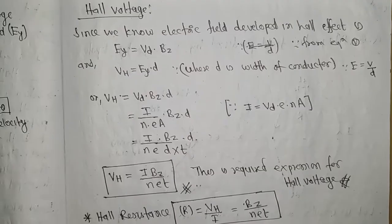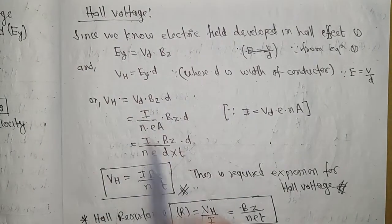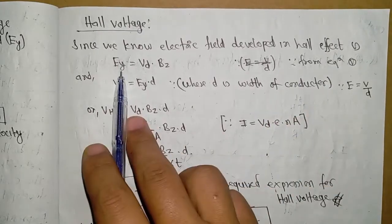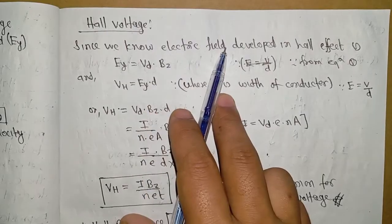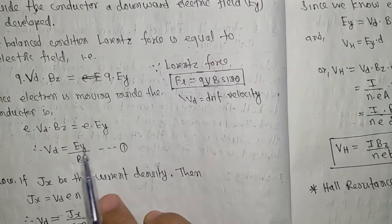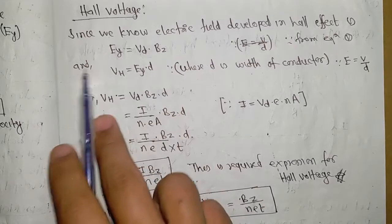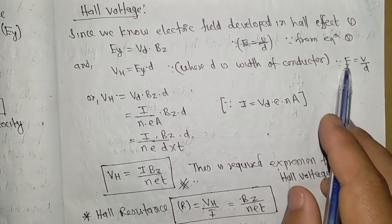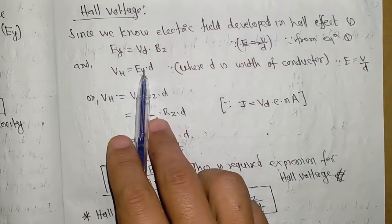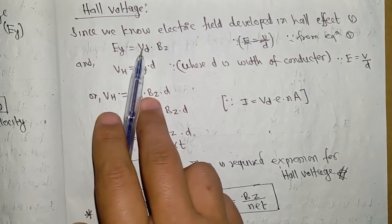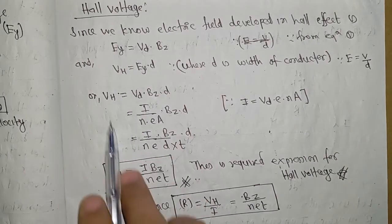Now for Hall voltage. Since we know the electric field developed in Hall effect from equation one is EY = VD·Bz, and the Hall voltage VH = EY·d, where d is width of conductor. Therefore VH = VD·Bz·d.